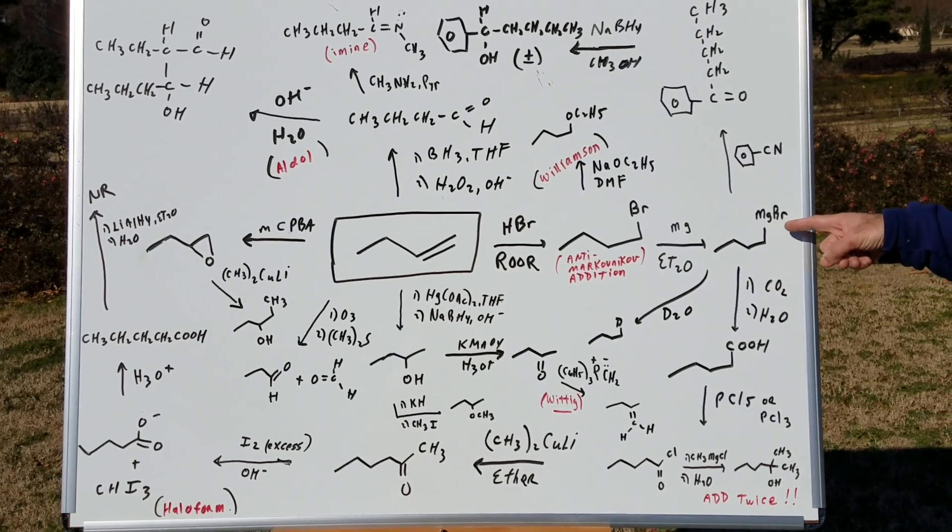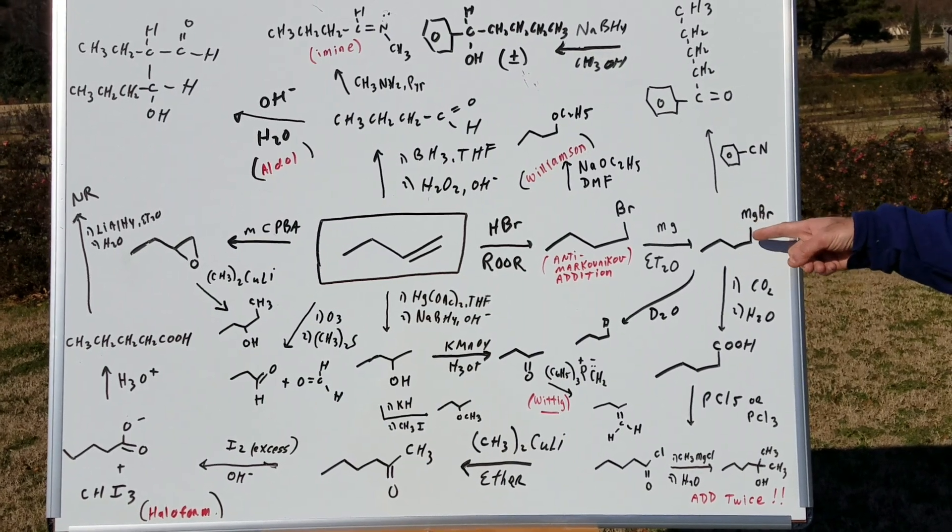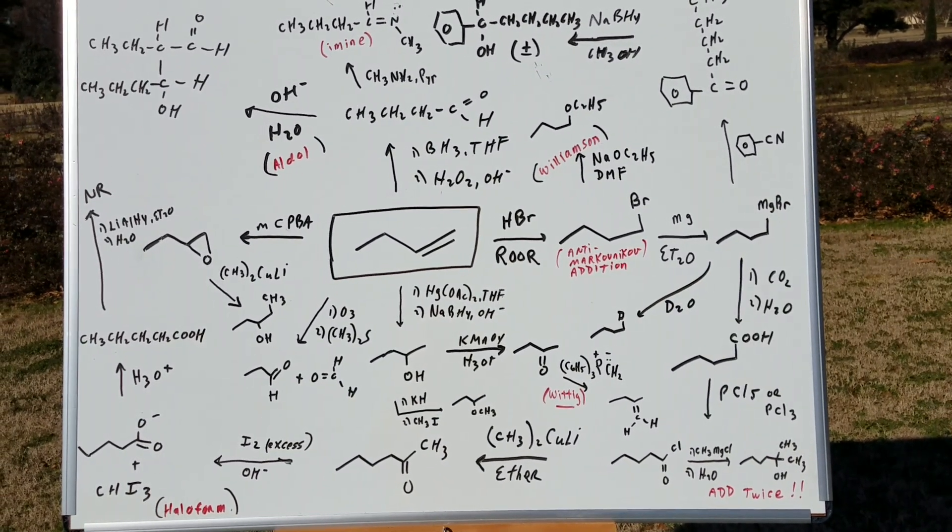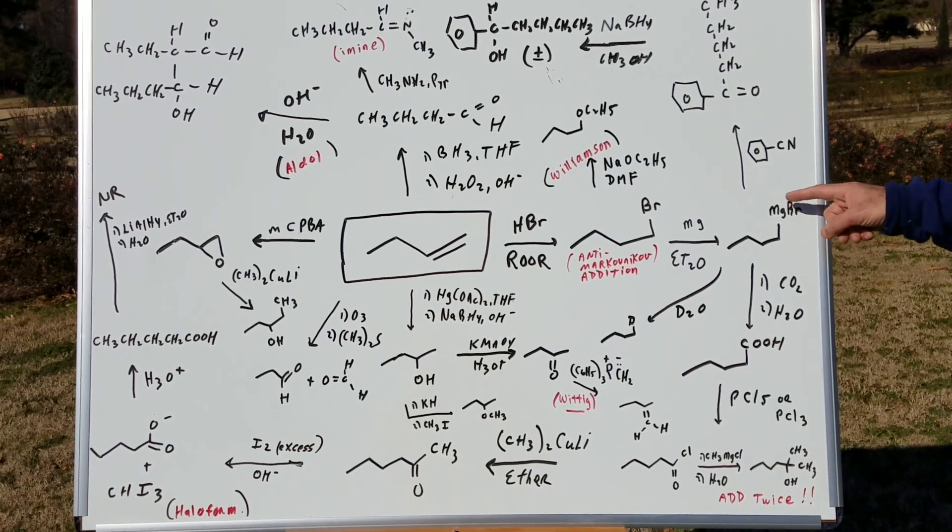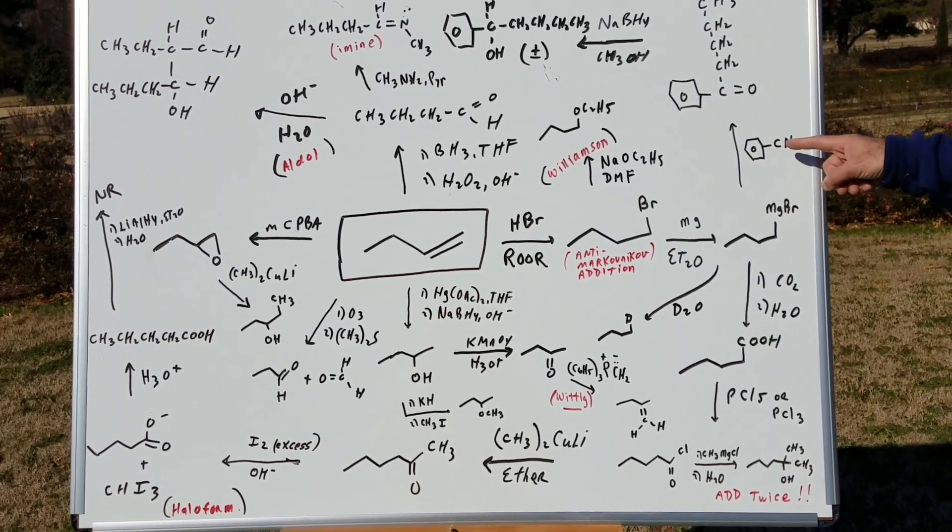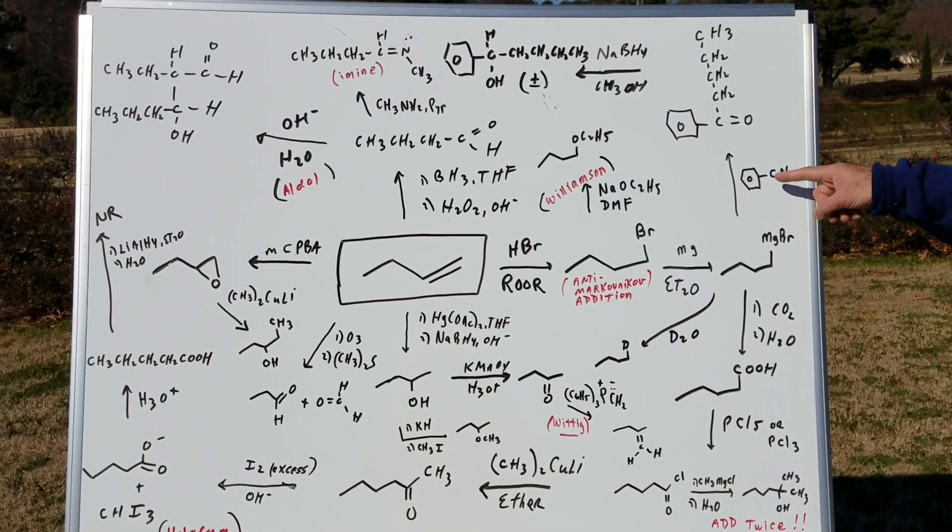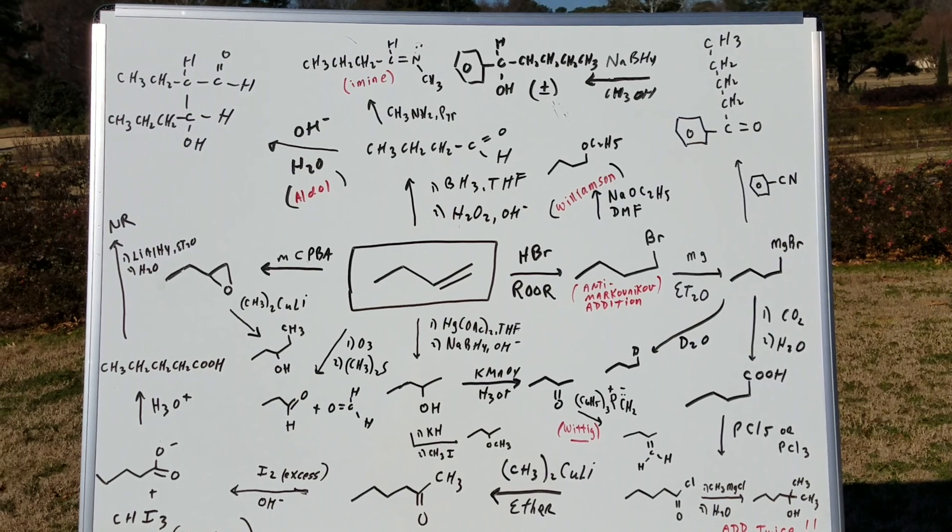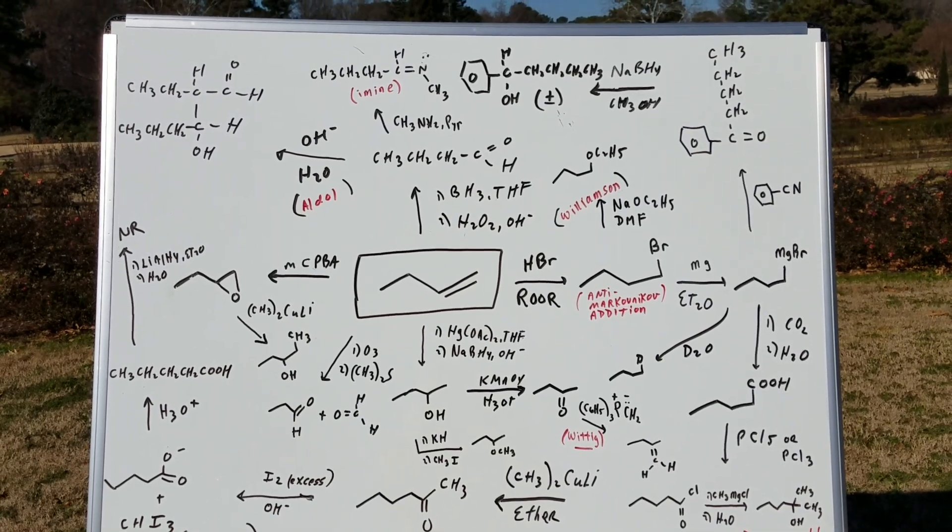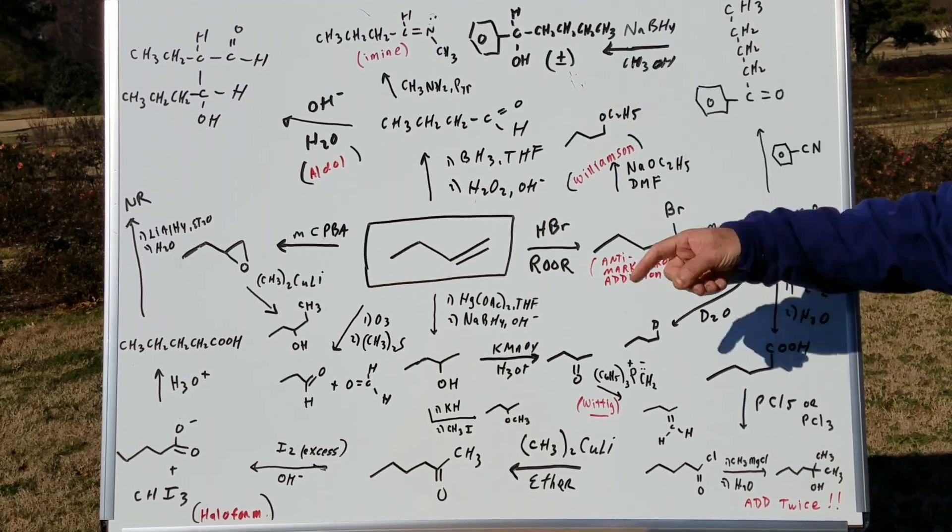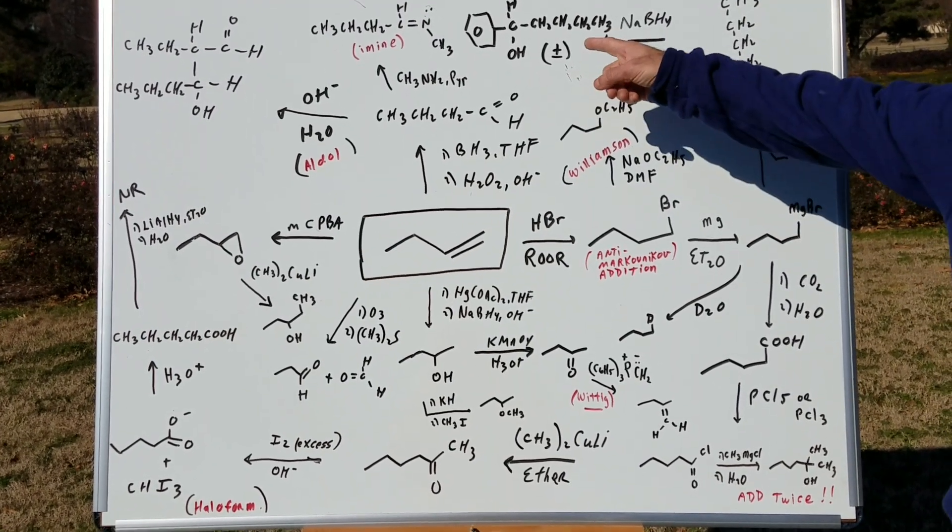Now, once you have a Grignard, I showed you there's three options. You can treat it with D2O and you deuterate the molecule which means you simply add a deuterium atom. Or you treat it with a nitrile. That's always a great question on the DAT. If you treat a Grignard with a nitrile, you end up with a ketone. And then as you can see at the top, I reduced the ketone